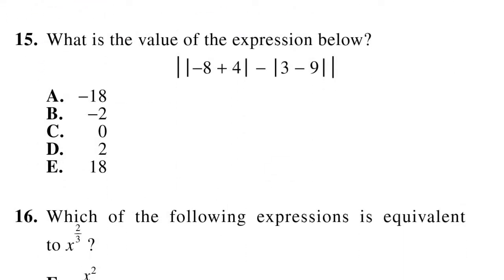What is the value of the expression below for number 15? We have an absolute value equation here, so we can start by completing the things inside the innermost absolute values. So -8 plus 4, that is equal to -4 minus 3 minus 9, that's -6. Now we keep our absolute value signs here, because now we're going to use those absolute value signs. So the absolute value of -4, that's 4. And then the absolute value of -6, that's 6. So we have 4 minus 6 inside our outermost absolute values, which 4 minus 6, that is -2. But the absolute value of -2 is just 2. So our answer to number 15 is D, 2.